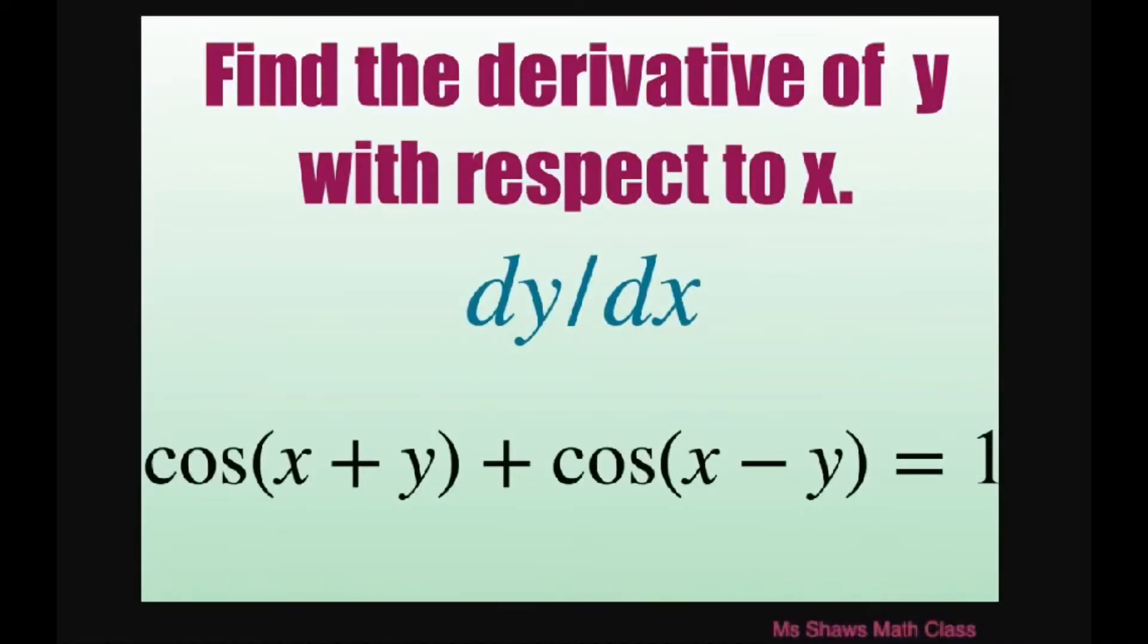Hi everyone. We're going to find the derivative of y with respect to x. We have cosine of x plus y plus cosine of x minus y equals 1.